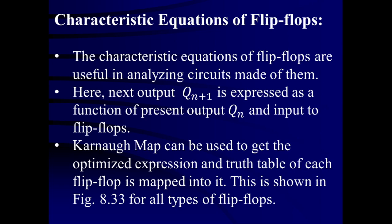How to obtain this characteristic equation? The characteristic equation is nothing but the next output, Qn+1, expressed as a function of present output Qn as well as the inputs. It is a dependent function of the input as well as the present output. The next output Qn+1 is represented in a sum-of-product equation form. That is called the characteristic equation, and we are going to obtain it for various flip-flops.